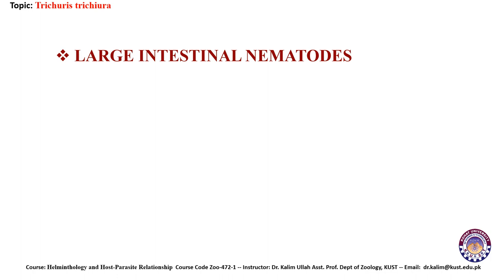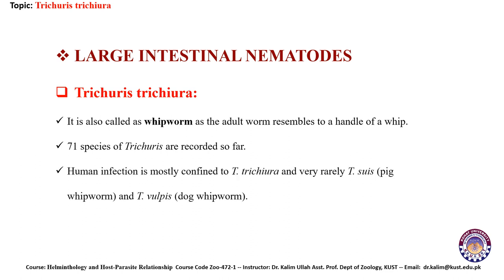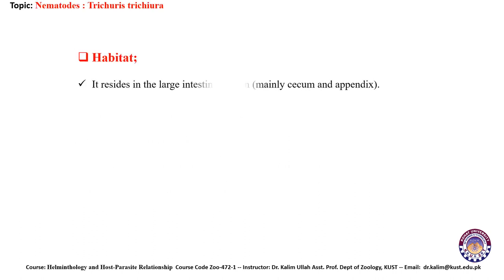Large intestinal nematodes — Trichuris trichura, also called the whipworm, as the adult worm resembles the handle of a whip. 71 species of Trichuris are recorded so far; human infection is mostly confined to Trichuris trichura and very rarely Trichuris suis. The dog whipworm is Trichuris vulpes. Habitat: it resides in the large intestine of humans, mainly in the cecum and appendix region.